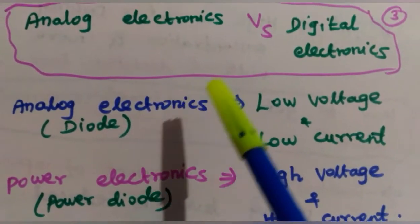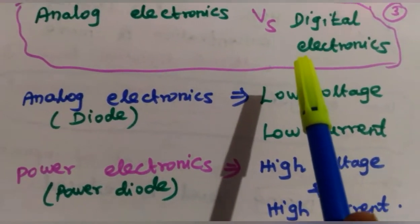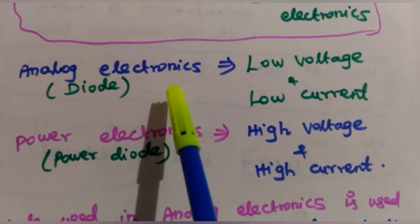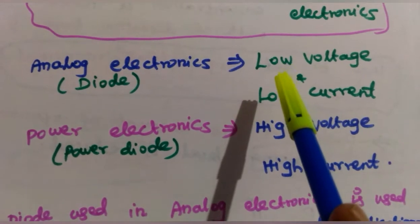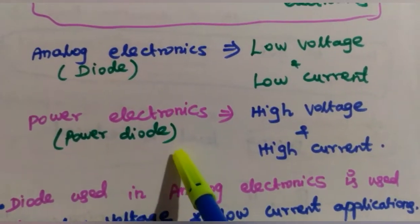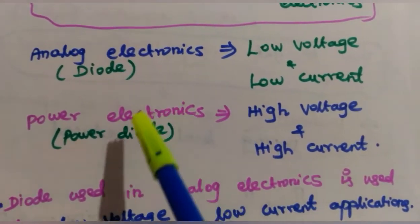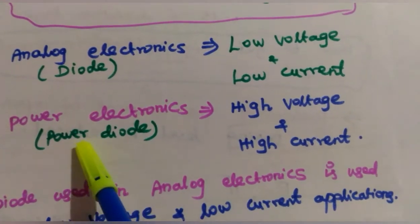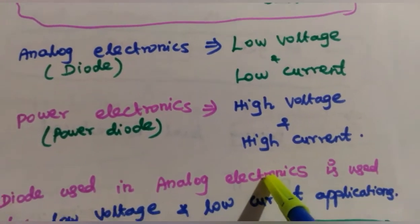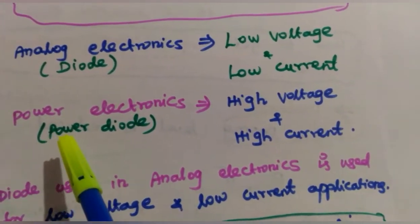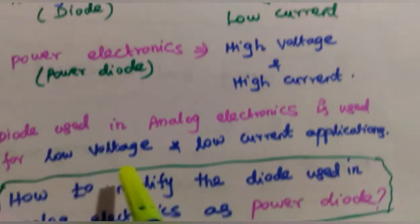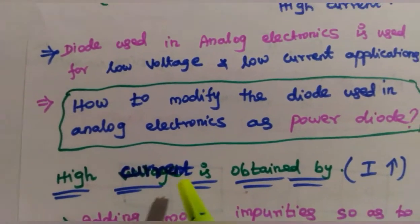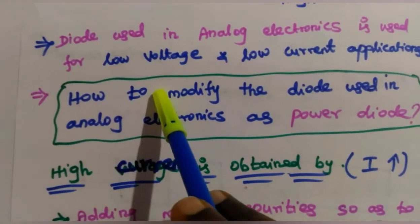Now let us see the difference between analog electronics and digital electronics in terms of the devices used. In analog electronics, we use a normal diode, which is used only for low voltage and low current applications. In power electronics, the diode used is a power diode, used for high voltage, high current, and high power applications.